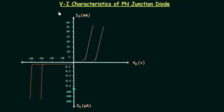In this lecture we will study the volt-ampere characteristics of a PN junction diode. The X-axis represents voltage across the diode and the Y-axis represents current through the diode. We will draw volt-ampere characteristics for both forward and reverse bias conditions.